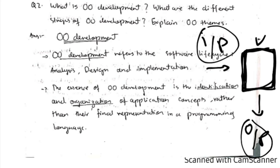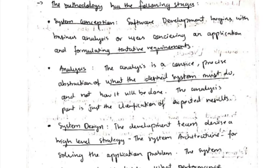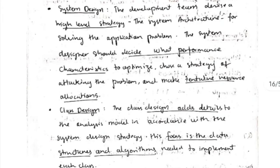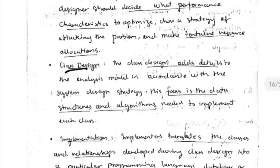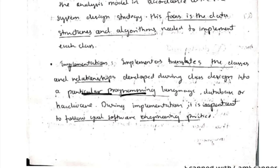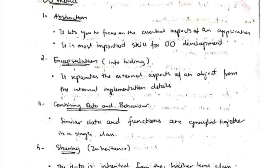The stages of OO development: first, system conception — having an idea of what system you are developing; second, analysis — adding more details to the idea; third, system design — carrying out the design for implementation; fourth, class design — adding data and functions, then translating into a programming language so it can be implemented.